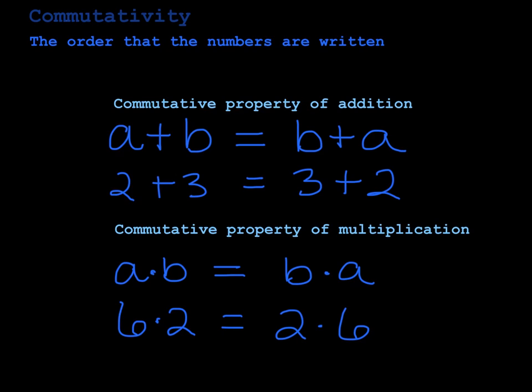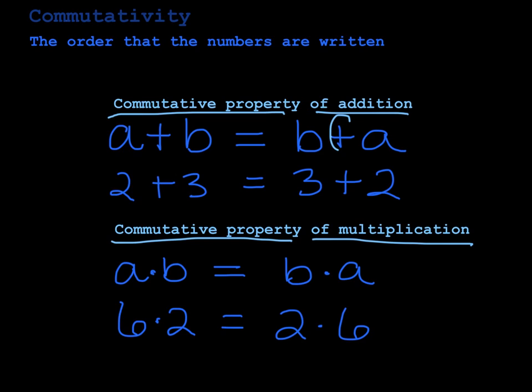If I'm quizzing or testing you over these properties, make sure that you write 'of addition' or 'of multiplication.' It takes both parts to get it completely right — to tell me the property and then what it's of. The addition and multiplication parts should be pretty self-explanatory, but just don't forget to write it down.